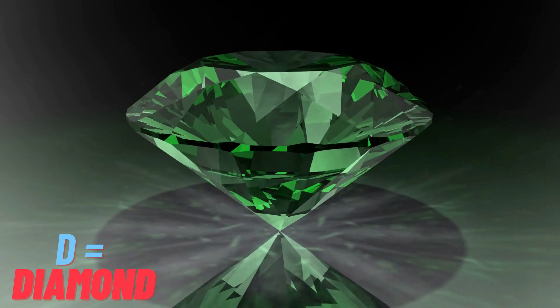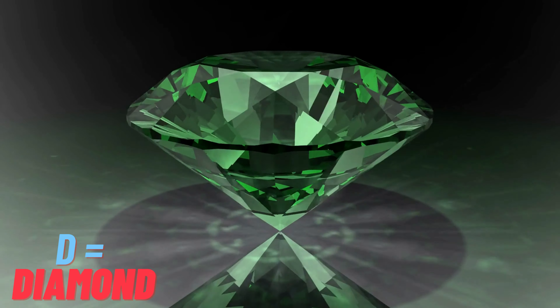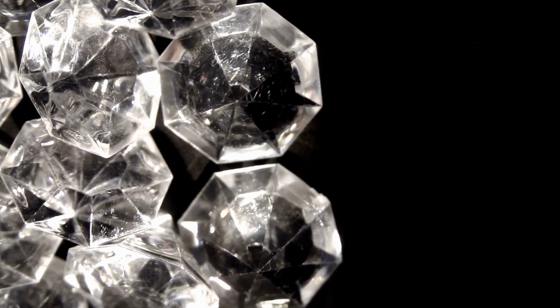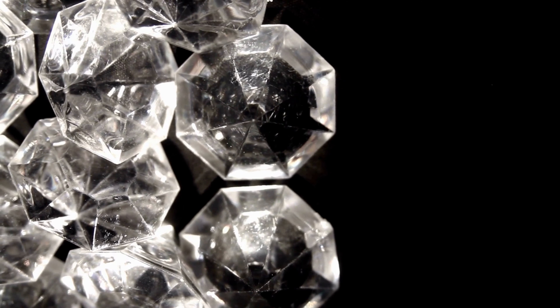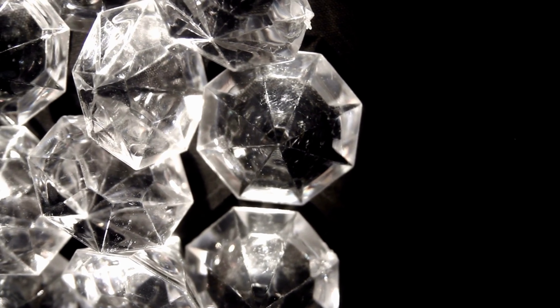D is for Diamond, a brilliant glint, with four equal sides, it's a geometric hint. Its sparkle and shine, a precious delight, Diamond's allure catches the light.